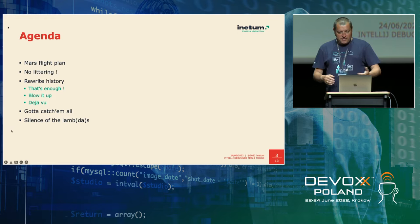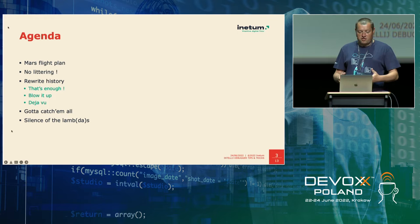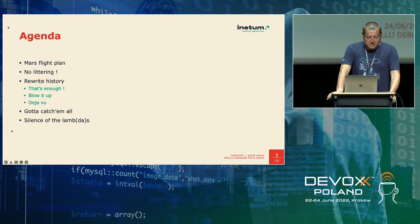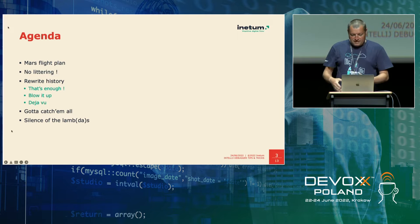The 'fly to Mars' topic is connected with the question of how to set up the application to be able to debug it correctly, or to make a complex setup before starting the app at all. Then we will go to something like 'no littering' — how to output the necessary information during a debugging session without littering the code with unnecessary System.out.println statements.